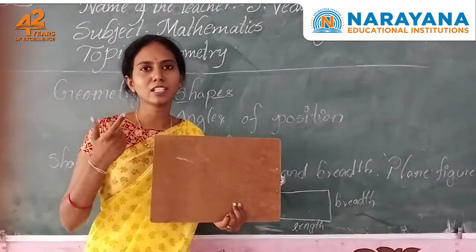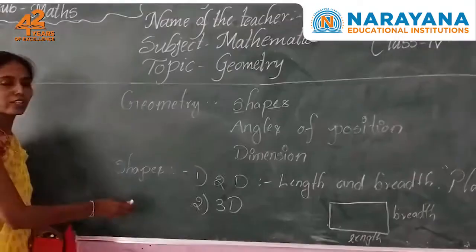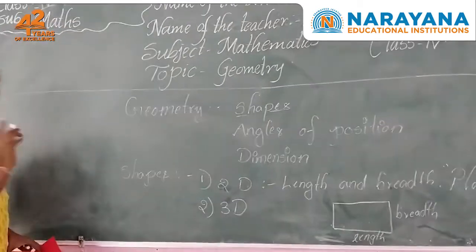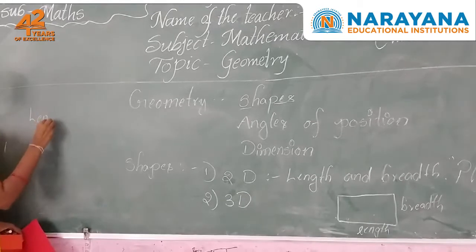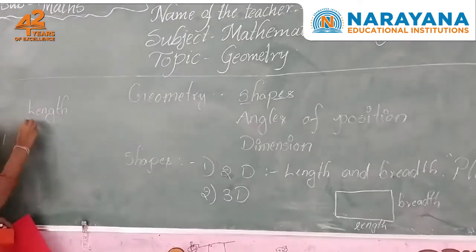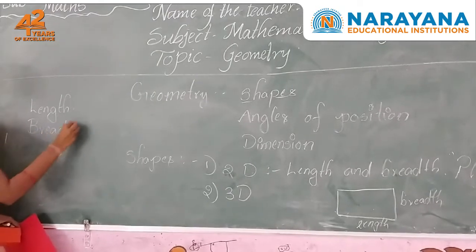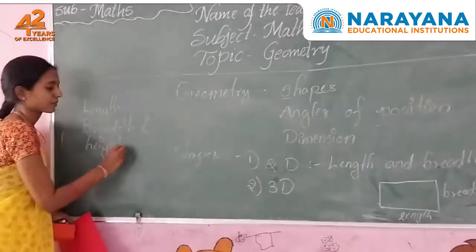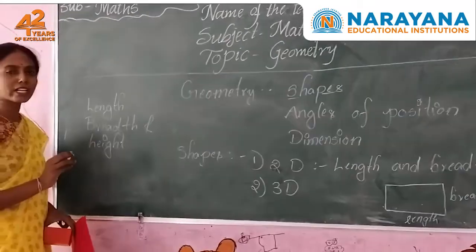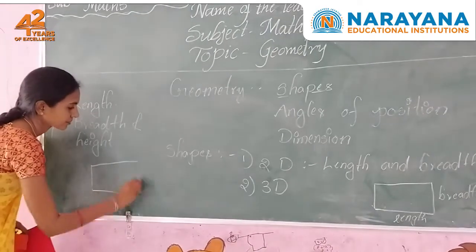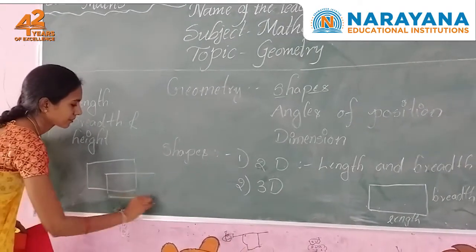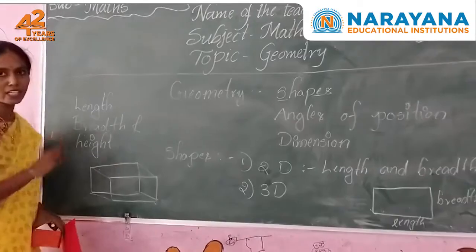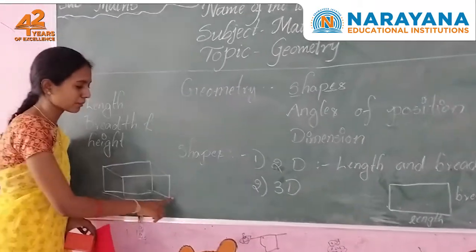But 3D shapes are different. Now we discuss about the 3D figures. 3D figures have three dimensions: that is, length, width, and height. You can see the figure of a 3D shape — it has length, width, and height.